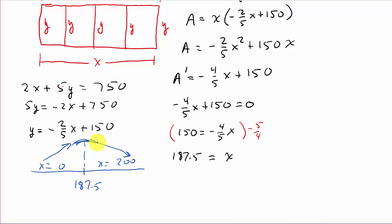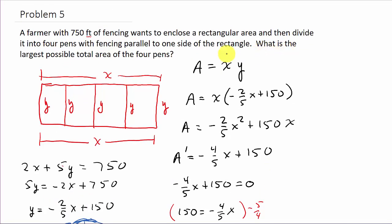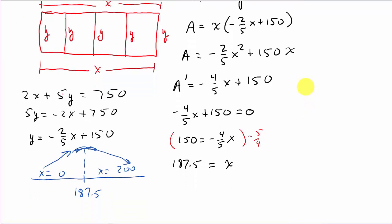Alright. So, they want to know what is the largest possible total area of the four pens. So, I mean, I can go ahead and I can get y. I don't know. I guess that might be the easiest thing to do. Or what I could do is to get the largest area. I know what x is. So, I could actually take x and just plug it back into here. Or I can plug it into here. My area formula. Okay. So, let's do that.